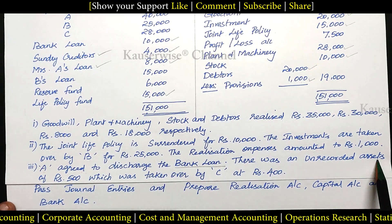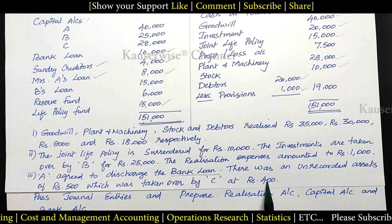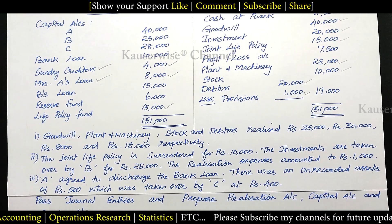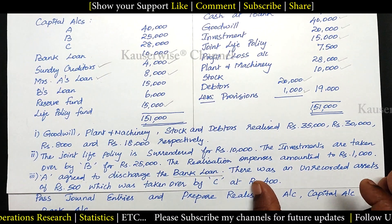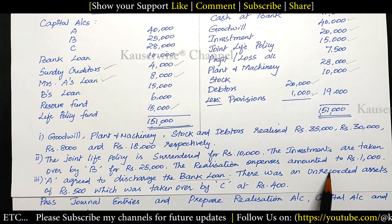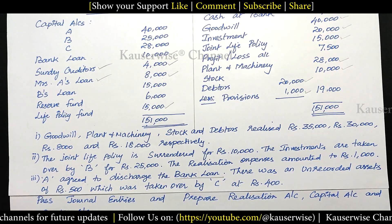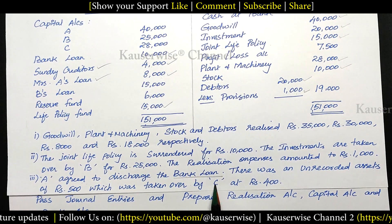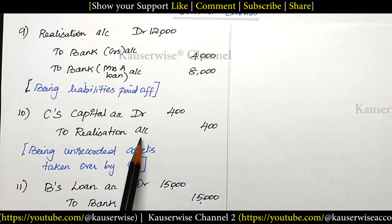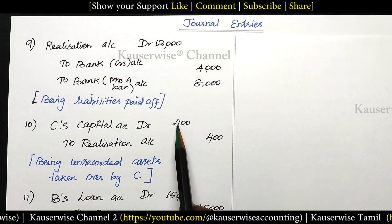Sixth adjustment: there was an unrecorded asset of rupees 500 taken over by C at rupees 400. If unrecorded assets are realized for cash, the entry would be Bank Dr. to Realization, but since it is taken over by partner C, we record the partner's capital account. Entry: C's Capital Account Dr. to Realization Account — 400 — being unrecorded assets taken over by Mr. C.